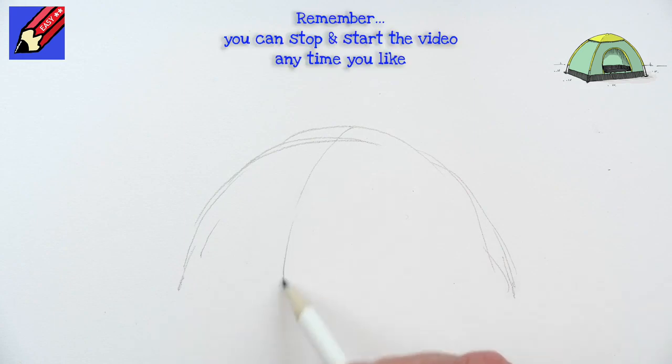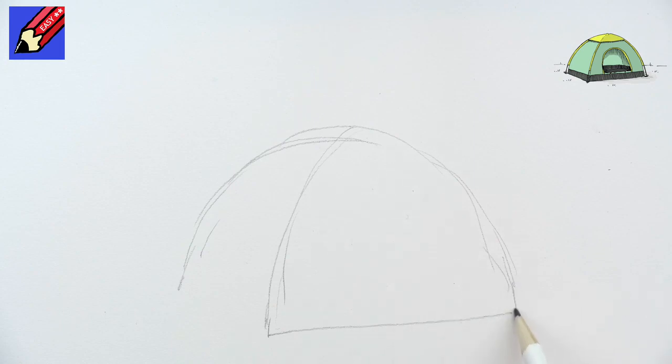Up at the top here, we're going to bring down another curve like that. Then we can join across and go back like that.